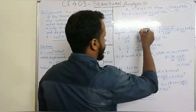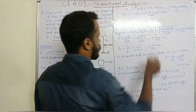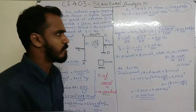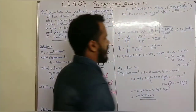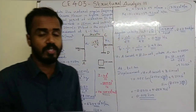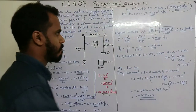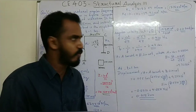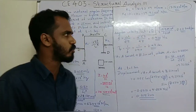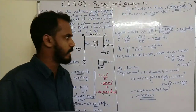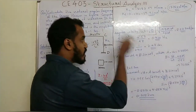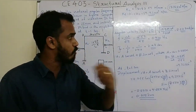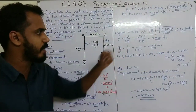Angular velocity omega is equal to root of K by M. Substituting the K effective value and M value gives omega equal to 2.57 radians per second. Frequency is equal to omega divided by 2π, giving 0.410 Hz. Time period is equal to 1 by F, which equals 2.43 seconds.